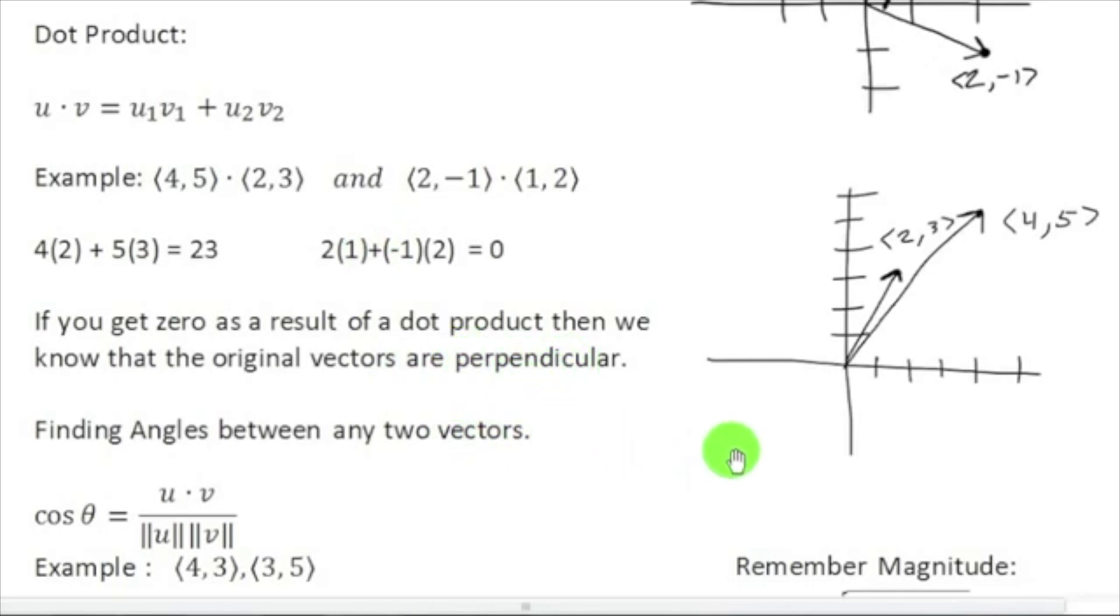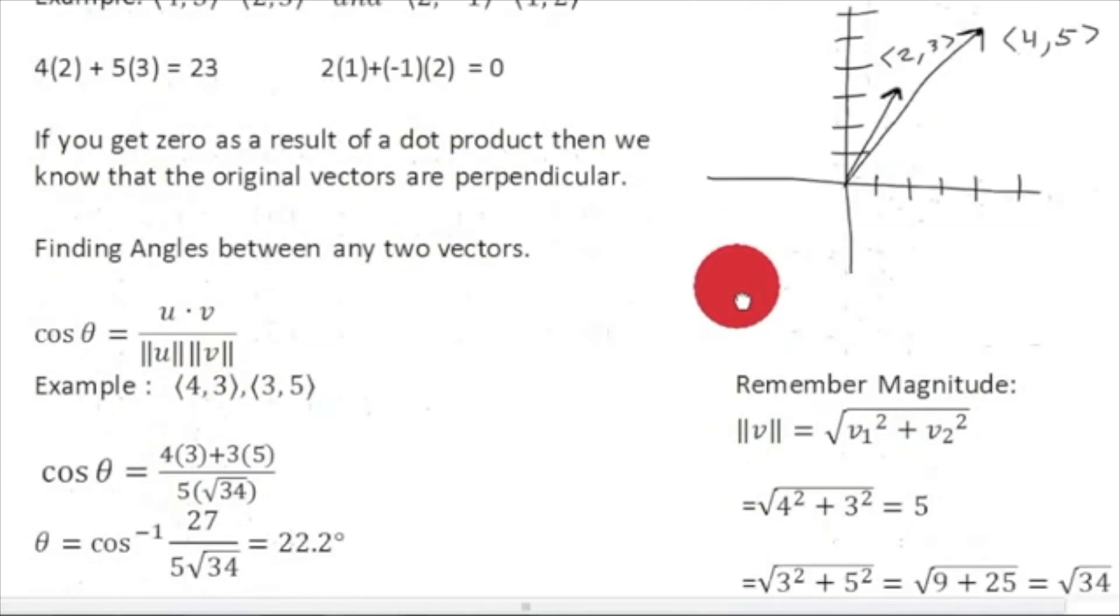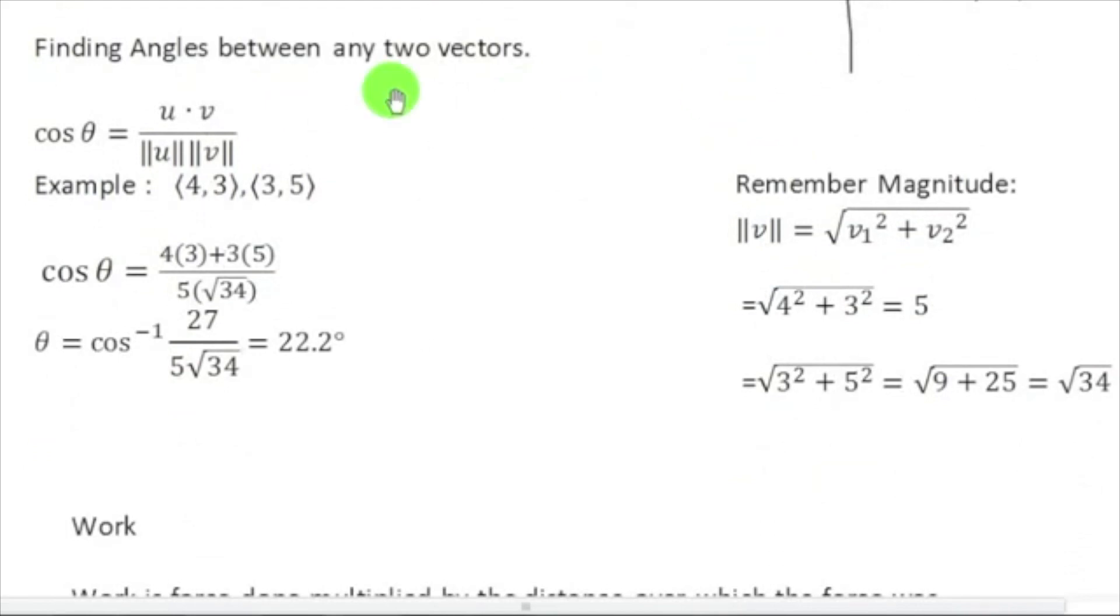Okay, well what happens if I have two vectors like this, and I would like to find the angle between those two vectors? Well, this is how you'd find that. Finding angle between two vectors is done with this formula. The cosine of theta, the angle, is equal to the dot product of u and v over the magnitude of u and v multiplied.